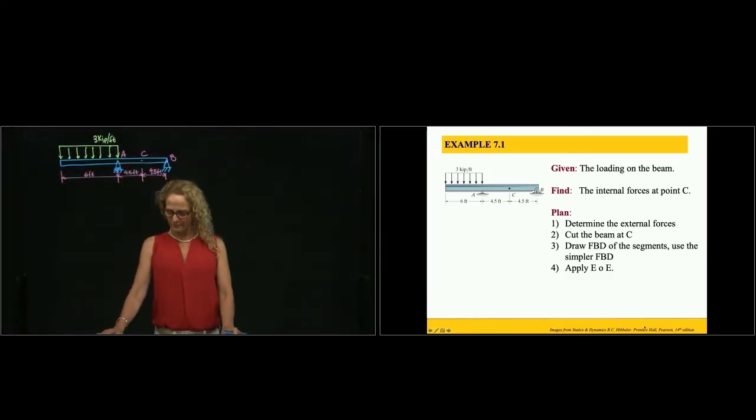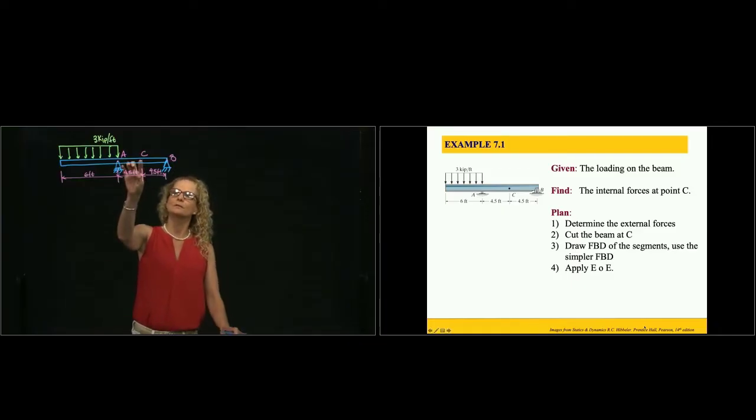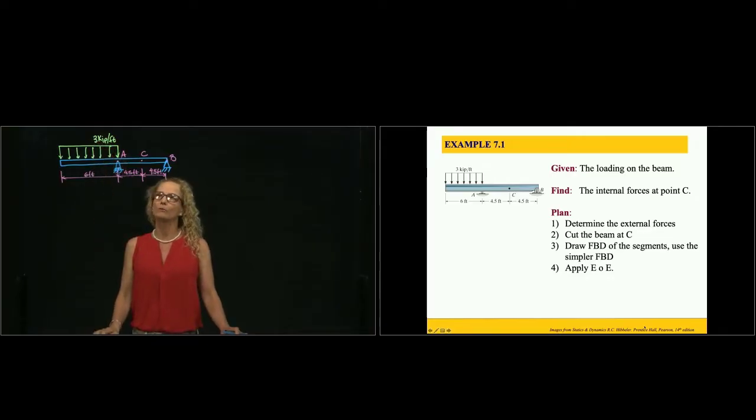Hi. So this is problem 7.1 of internal forces in beams. In this problem, we want to find the internal forces at point C. Here we have a beam with a distributive force of 3 kip per feet. Remember that kip is a thousand pounds. So here we have 3,000 pounds per feet. Here we have a roller and then we have a pin.